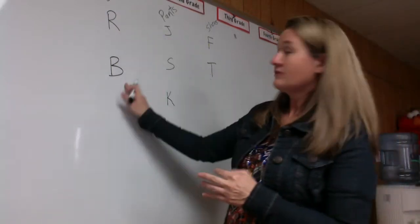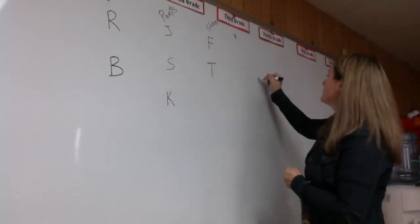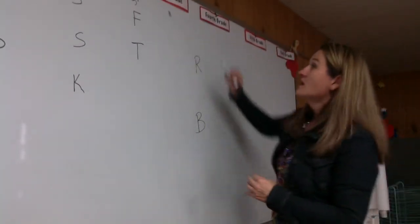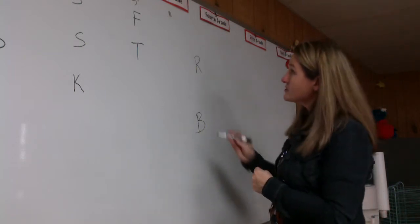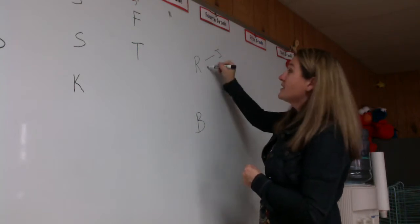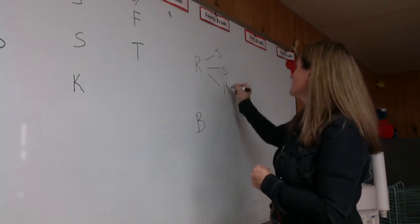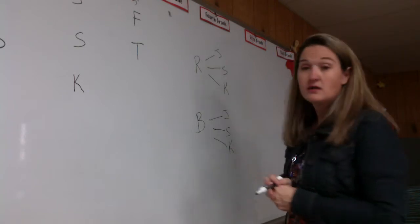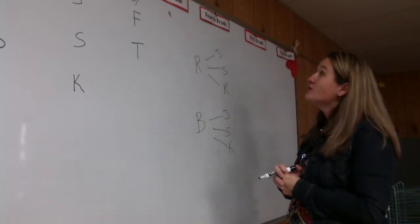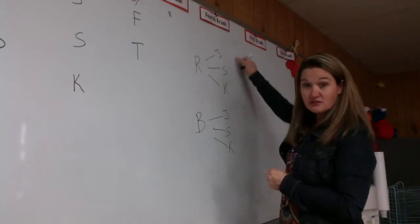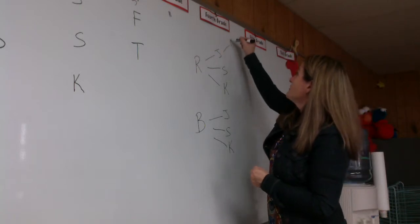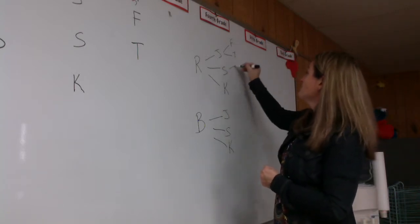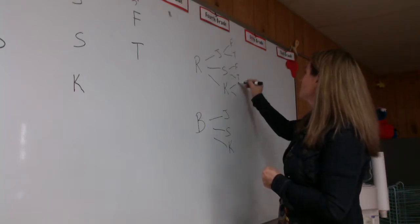We'll start with shirts: I've got a red shirt and a blue shirt. Going to the next category — pants — I could have a red shirt with jeans, shorts, or khaki. And then the same thing with blue: blue shirt with jeans, shorts, or khaki. Now I'll add shoes as branches. I could have red shirt, jeans, and flip flops or tennis shoes; red shirt, shorts, flip flops or tennis shoes; red shirt, khakis, flip flops or tennis shoes. And the same pattern continues down for blue shirt.